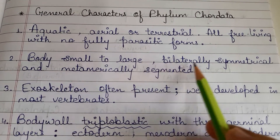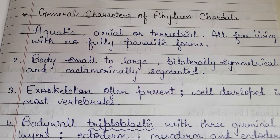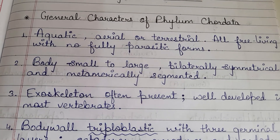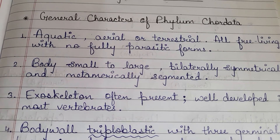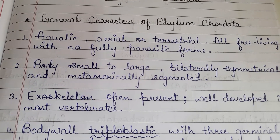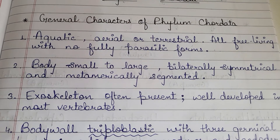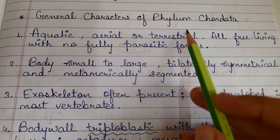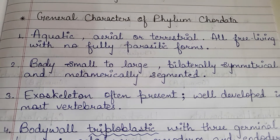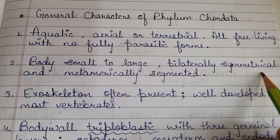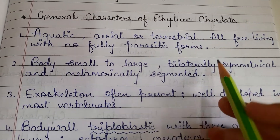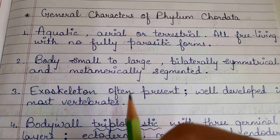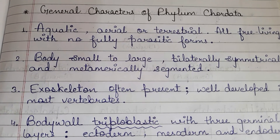Next characteristic: body small to large, bilaterally symmetrical and metamerically segmented. Members of phylum Chordata range from the smallest creature to the largest animal — the blue whale, the largest mammal on earth. They are bilaterally symmetrical, meaning bilateral symmetry is present, and they are metamerically segmented — metameric segmentation is present.